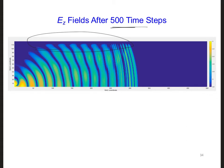Also, we can see waveguide modes propagating down the parallel plate waveguide we've created between the ground and the ionosphere. Next time we'll talk about what to do with the right side of our grid.